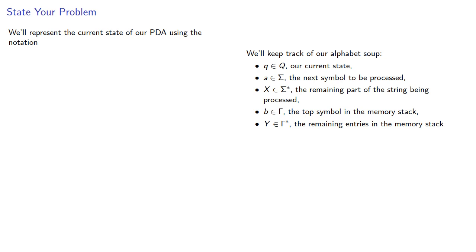So, we'll represent the current state of our pushdown automaton using the notation (q, ax, bγ). Again, that's the current state, the first symbol of the string and the remaining part of the string, and the first symbol of the memory stack and the remaining part of the stack.